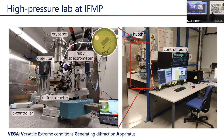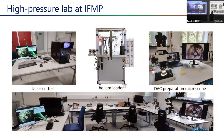For high-pressure experiments, the sample sits in a pressure cell between two diamond anvils, and we use ruby to monitor the pressure inside the sample volume in situ. We also have a helium loader to load the sample space with helium — the best pressure medium — which is important for studying layered materials to avoid non-hydrostatic conditions. If you have a nice crystal you'd like to measure under high pressure, come talk to me.